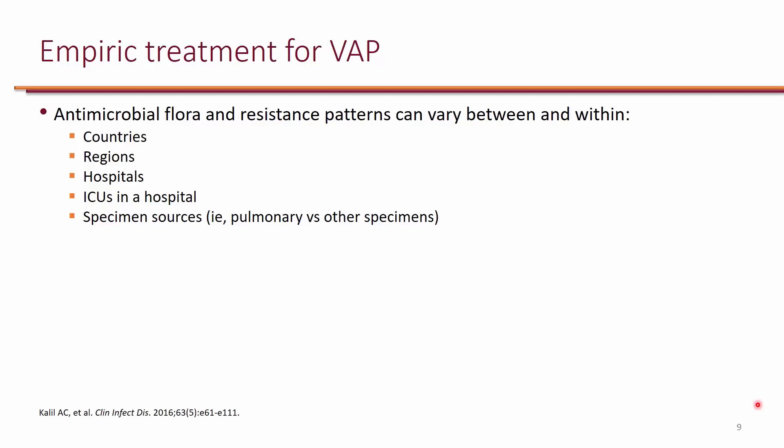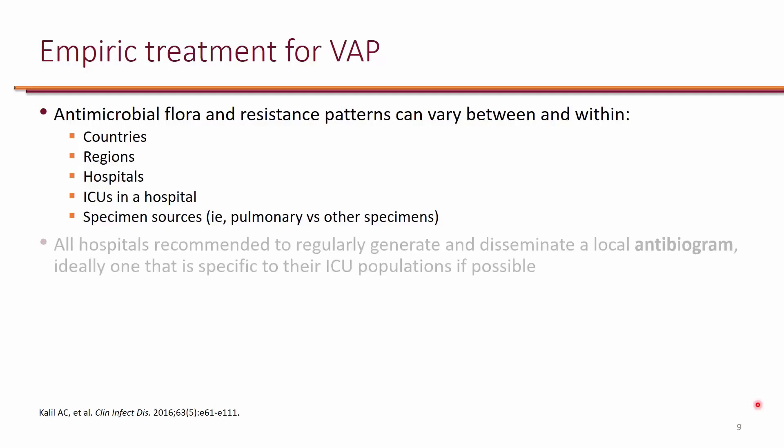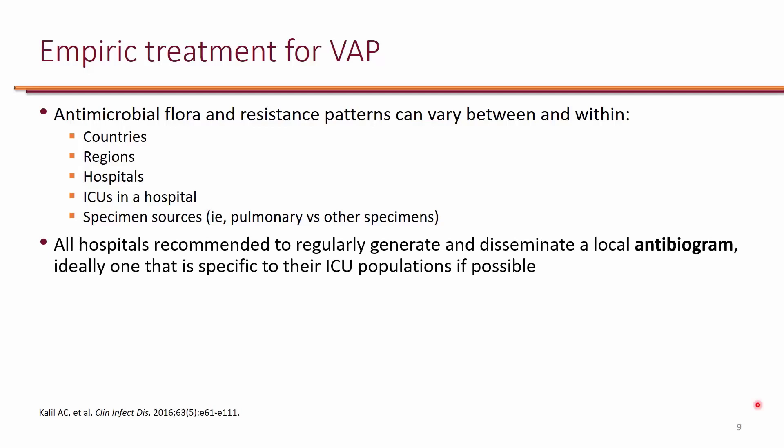Another important thing to know is the source of specimen. For example, organisms from urine versus organisms from a pulmonary specimen can have different resistant patterns. That's why it's recommended that all hospitals regularly generate and disseminate local antibiograms — ideally one specific to their ICU populations — and it's recommended that hospitals do this at least once a year.